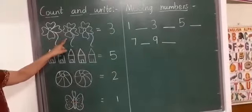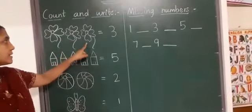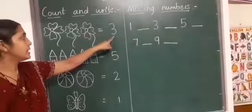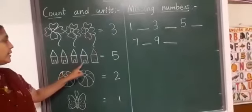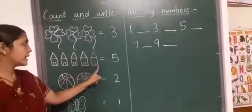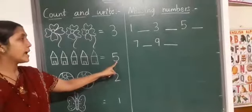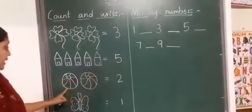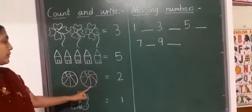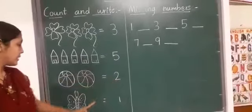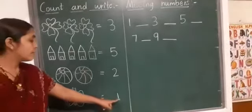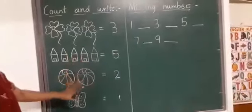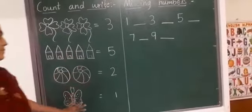One, two, three. Three flowers are there. Write here number three. Next. One, two, three, four, five. Five houses are there. The number five. We write one, two. The number two. One. One butterfly is there. Number one. Understood children? Very good.